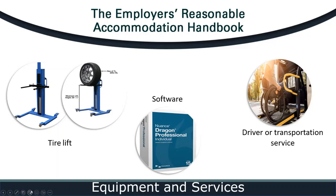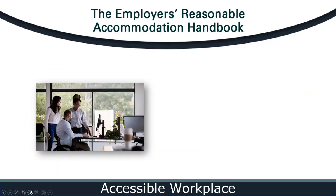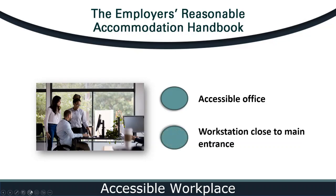What are some ways an employer can make the work environment accessible for a person with a physical disability? One example is of an applicant who uses a wheelchair and requests an accommodation for the interview, which is scheduled on the third floor of an office building without an elevator. As a reasonable accommodation, the employer relocated the interview to an accessible office on the first floor. Another example is an employee with multiple sclerosis that impacts her endurance for walking long distances — one idea is to provide a designated workstation close to the main entrance and common areas to minimize the distance she needs to walk.